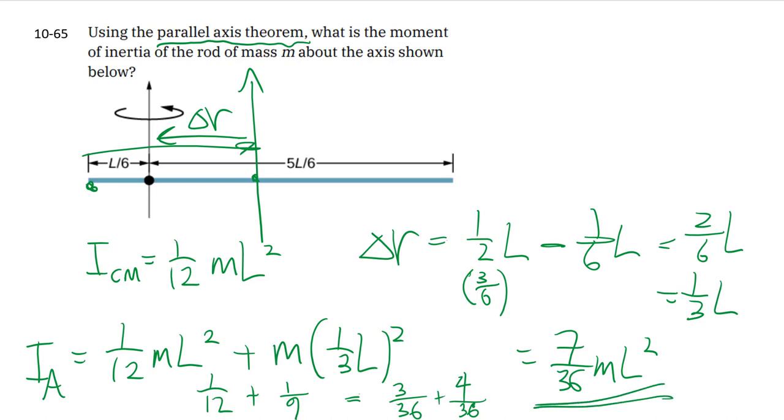And there you go, the parallel axis theorem. So that we don't have to have tables of every single point along the body. We can just use this to calculate given the center of mass moments of inertia.